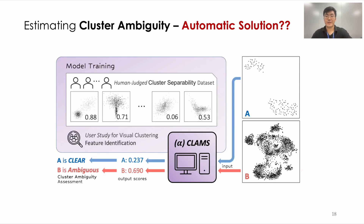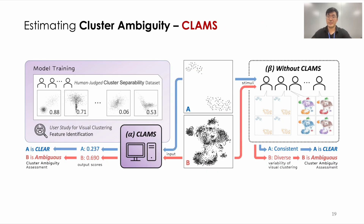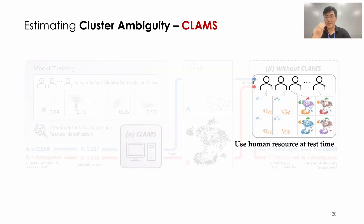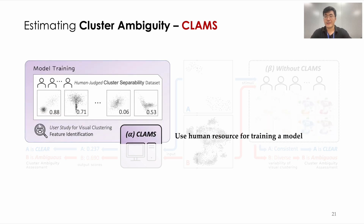What's the difference between CLAMS and the manual solution? The biggest difference is the time at which human resources are used. The manual method uses human resources at test time, which obviously needs a lot of resources and is not scalable. On the other hand, CLAMS uses human resources at training time. Instead of using real humans to test individual visualizations, we construct a virtual human and reuse it repeatedly, making the estimation of cluster ambiguity more scalable and efficient.